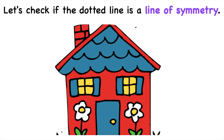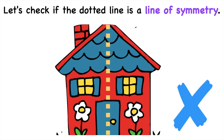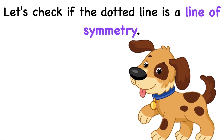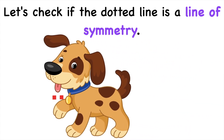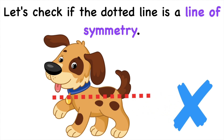How about if I have this? I will draw my line of symmetry or the dotted line here. Is the dotted line a line of symmetry? Good job! It's not. Why? Because of this figure. How about if I have the dotted line here? I will draw the dotted line here. Is the dotted line a line of symmetry? Good job, children. It's not because it doesn't divide the figure into two equal parts.